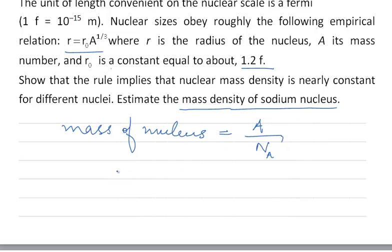So if we consider this, then nuclear mass density will be given by A by Na, that is mass of the nucleus, divided by the volume of the nucleus. This can be written as A upon 4 by 3 pi r cube times Na.